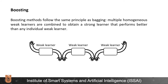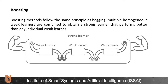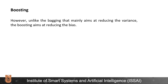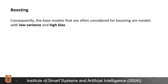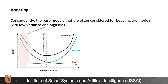Another popular combination method in ensemble learning is boosting, which follows the same principle as bagging, where multiple homogeneous weak learners are combined to obtain a strong learner that performs better than any individual weak learner. However, unlike bagging that mainly aims at reducing the variance, boosting aims at reducing the bias. Consequently, the base models often considered for boosting are models with low variance and high bias.